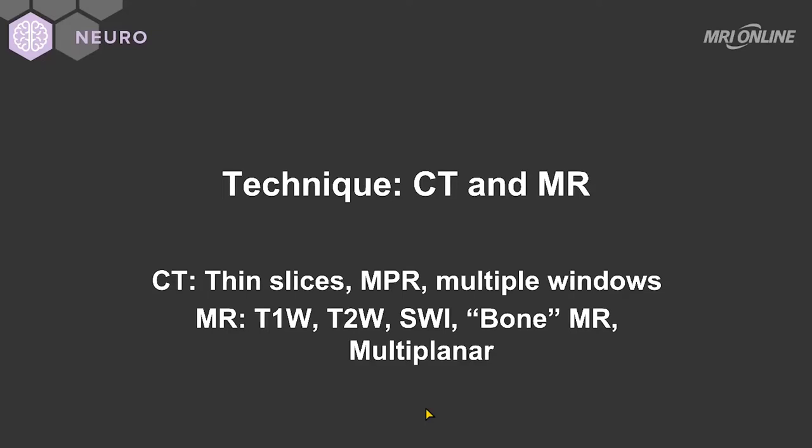By multiple windows I mean both the brain window as well as a broader window and centered image that will allow you to detect subtle subdural collections, as well as the bone windows in order to see fractures. At the very least you should be looking at three separate windows: brain window, subdural window, and bone window, as well as multiple planes — axial, coronal, and sagittal.